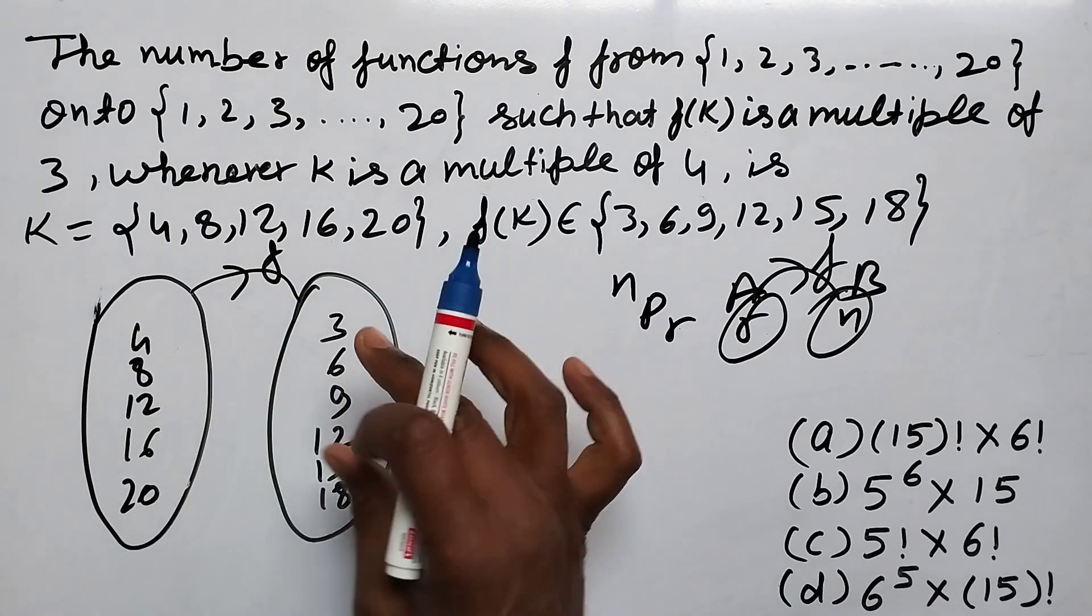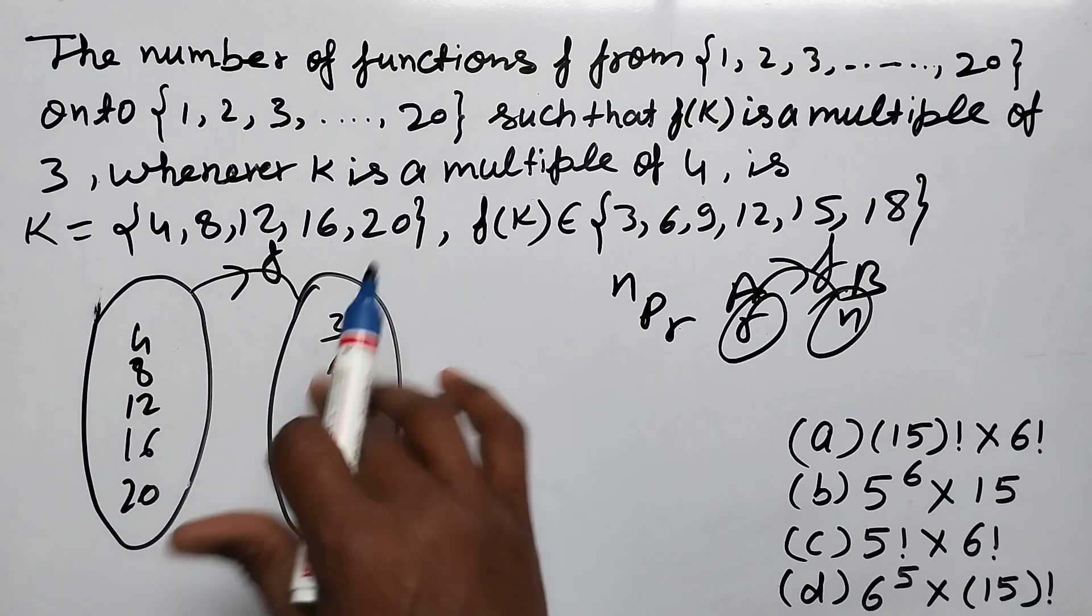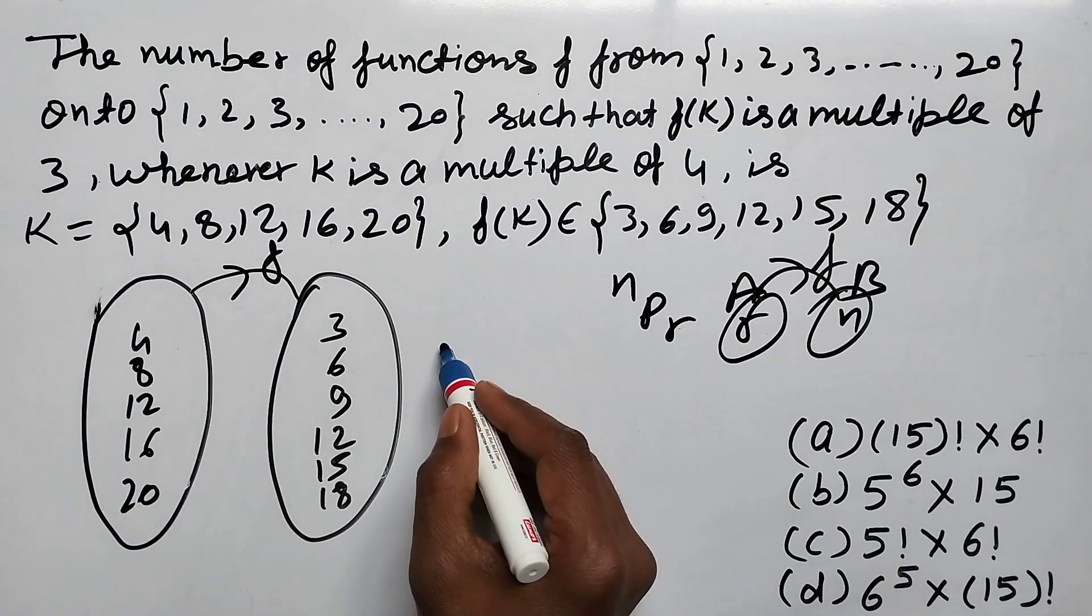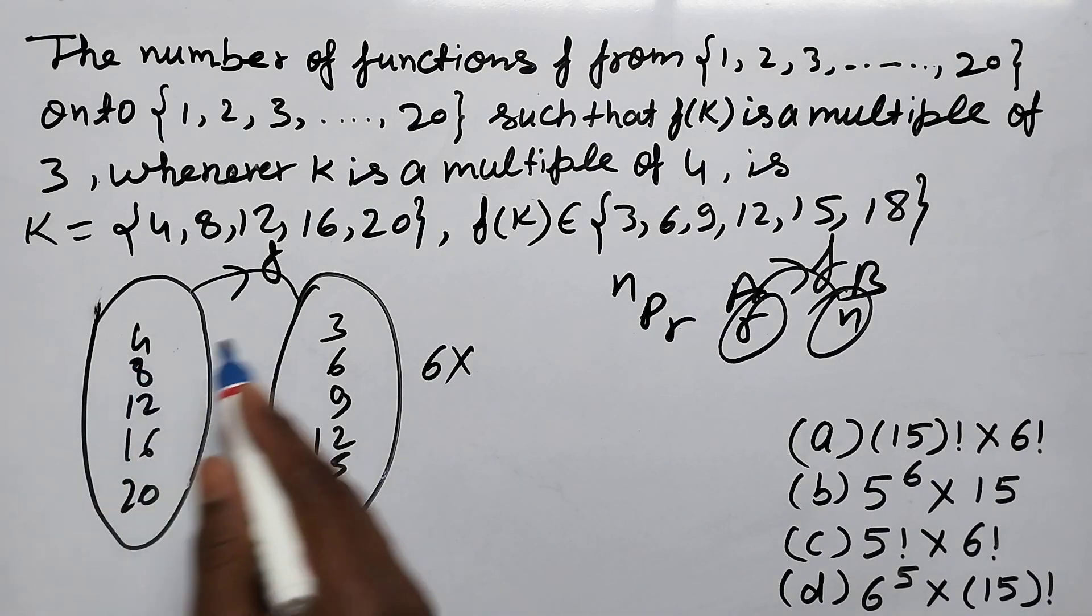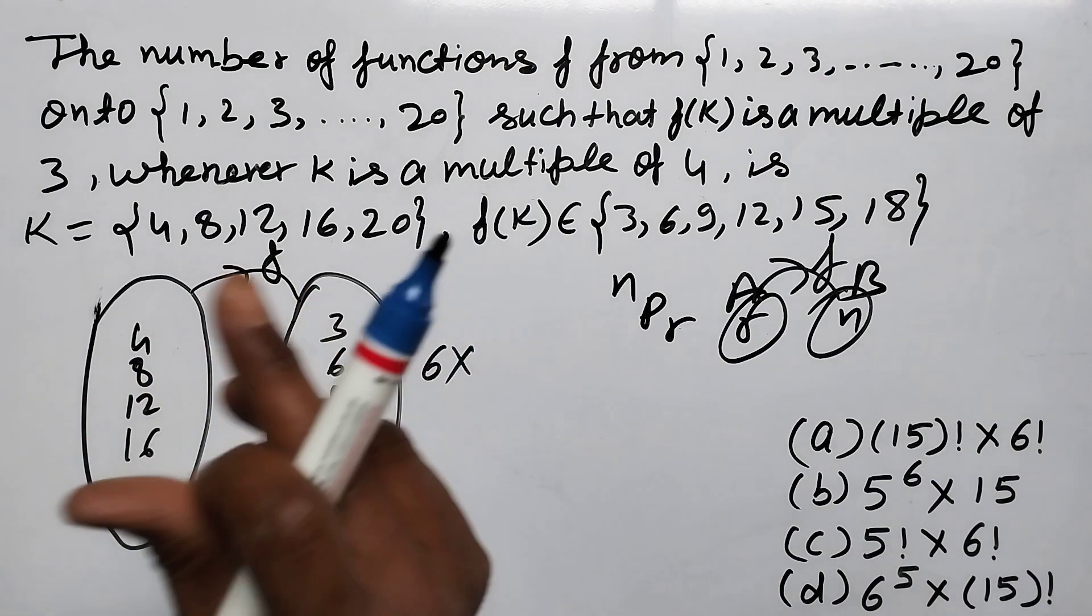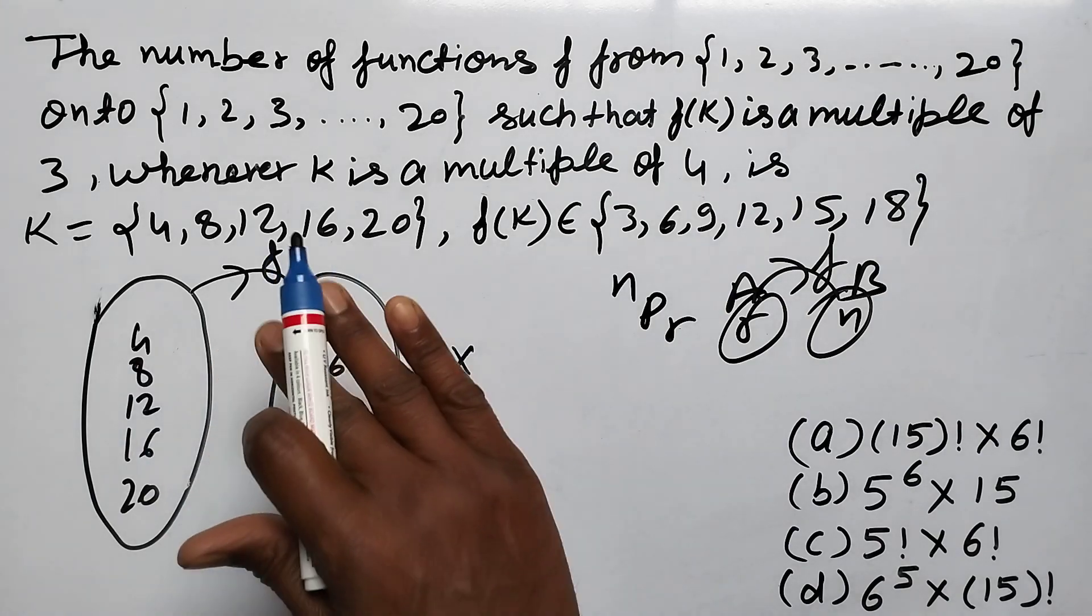8's - now one image is already taken, so from 5, any one of 5, in 5 ways.